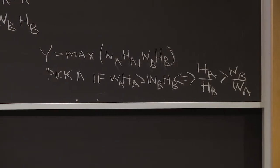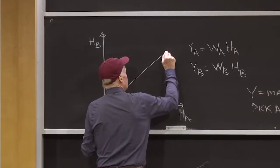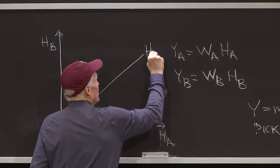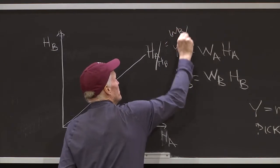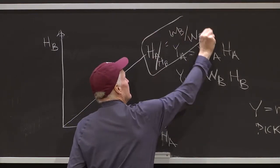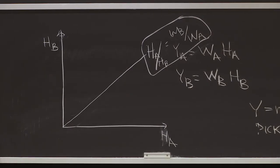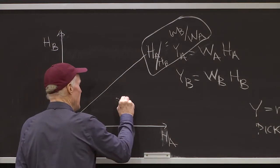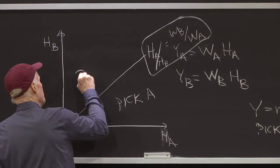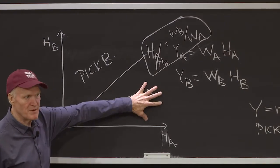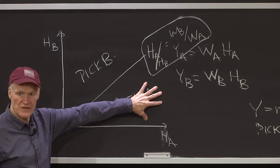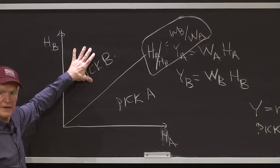So in this picture, that looks like a line. This is HA over HB equals WB over WA. So that's the split, that's the equilibrium. Guys on that line are indifferent. Everybody over here, you pick A, and everybody over here picks B. Everybody who's got more HA relative to HB, that's the people below this line, choose A. Everybody above this line chooses B.